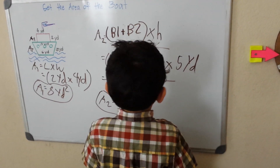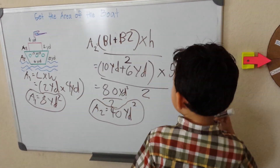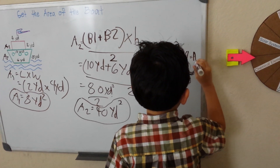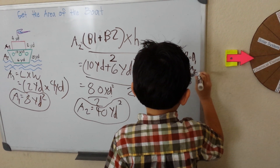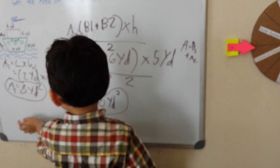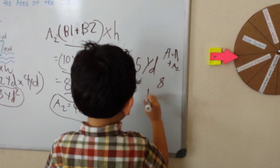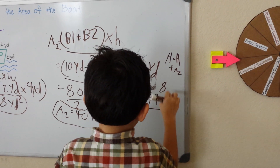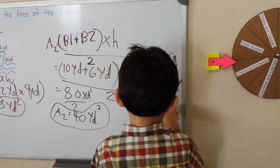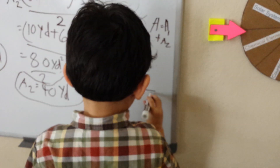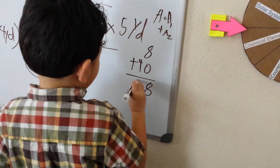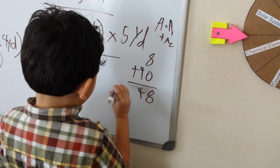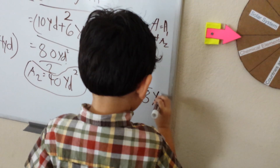Now I can get my area for the boat. Our area is equal to area one plus area two. Now, what's our area one? It's 8 yards. So 8 plus 40 equals — 8 plus 0 is 8, bring down, that's 4, so I got 48. This is our area for the boat: 48 yards squared.